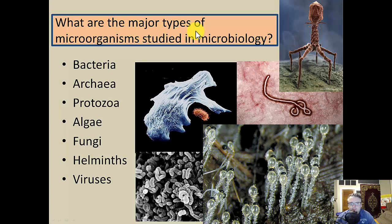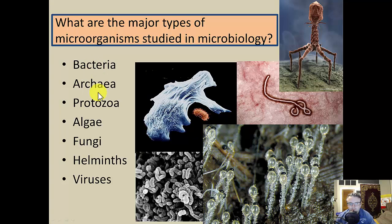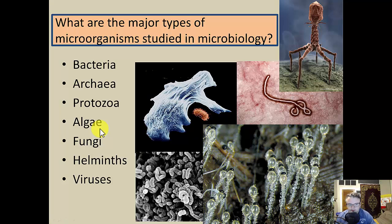We want to look at what are the major types of microbes being studied. I broke this down into really six major types, though we'll study a few other things as well — so about seven basic types of microbes: bacteria, archaea (sometimes pronounced archaea), protozoa, algae, fungi, helminths, and viruses. Each one of these is very different from the next, and these are very broad categories with lots of variation within each one.